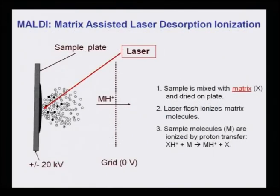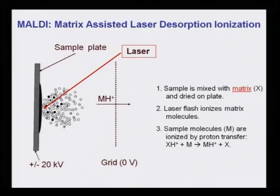In electrospray ionization, the sample is introduced with nitrogen gas through a nozzle with a very high voltage applied, forming charged droplets. For MALDI, the laser beam of 337 nanometers reacts on the cyano-cinnamic acid surface — the sample is mixed with the matrix, dried on a proton plate, and laser flash ionizes the matrix molecules; sample molecules are then ionized by proton transfer. Both MALDI and ESI are soft methods used for peptides and proteins which get denatured easily with hard methods.